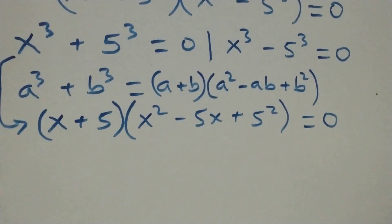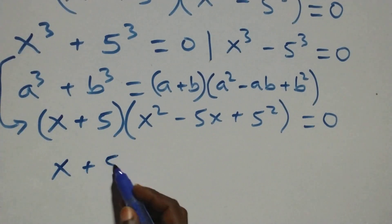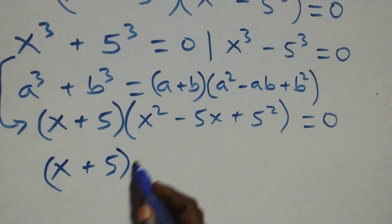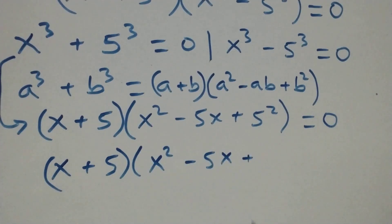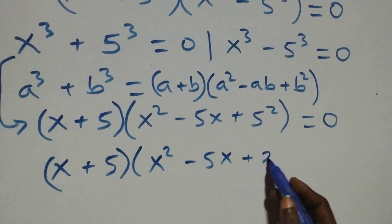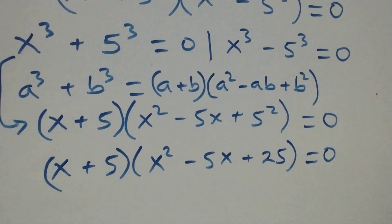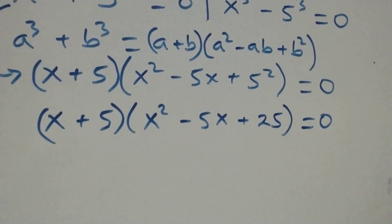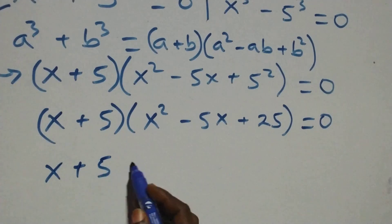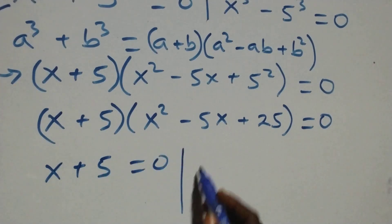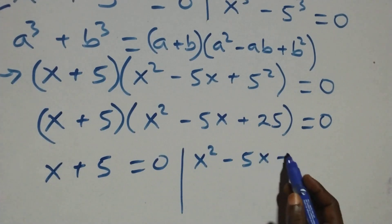This is the same as x plus 5 times x squared minus 5x plus 25 equals to 0. We have two possible sub-cases: first, x plus 5 equals to 0, or x squared minus 5x plus 25 equals to 0.